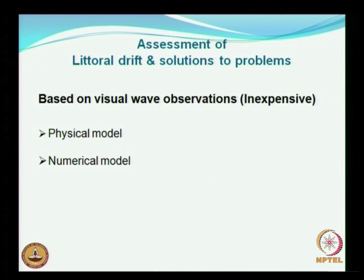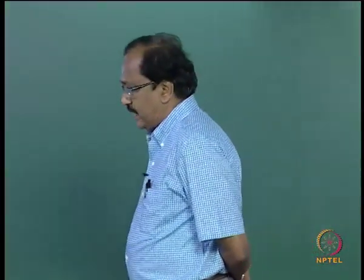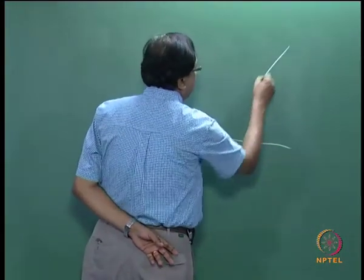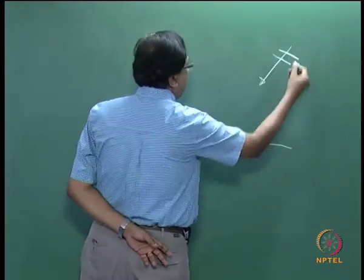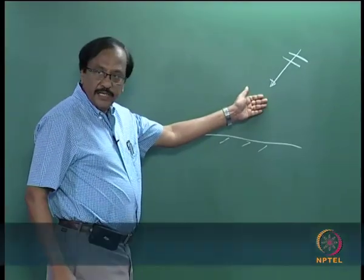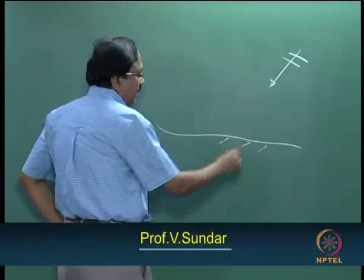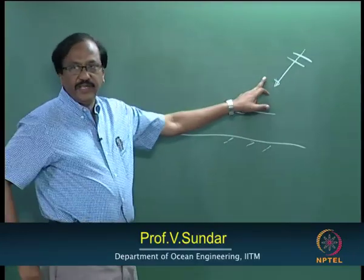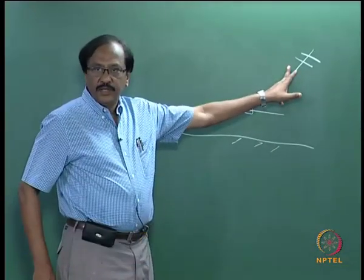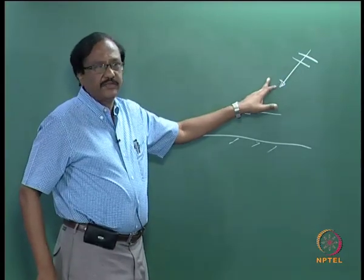On the estimation of littoral drift — both its direction and quantity — the direction actually depends on the direction of the wave, which controls the longshore currents. Longshore currents are the driving force for sediment transport. When you have the shoreline, if the waves are coming in a particular direction, when the waves break, that is what sets up your longshore current. It basically depends on the angle at which the wave is going to break.